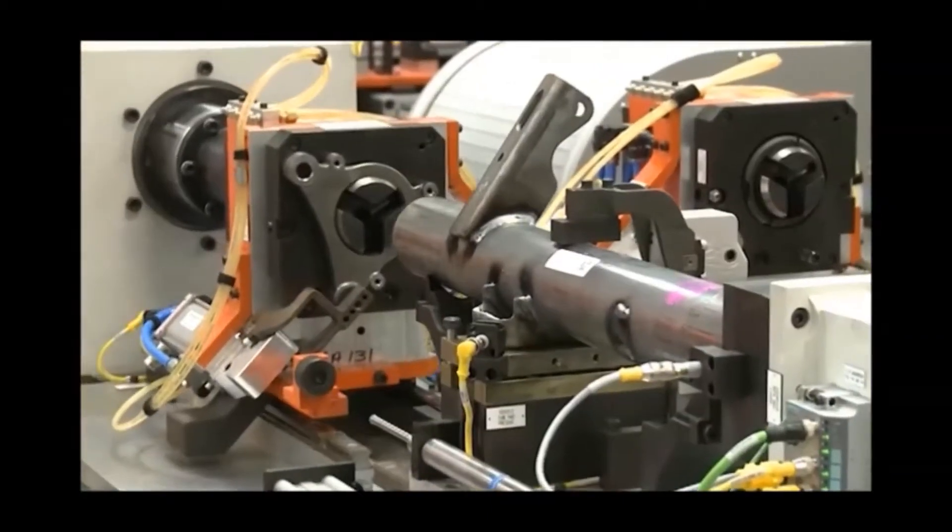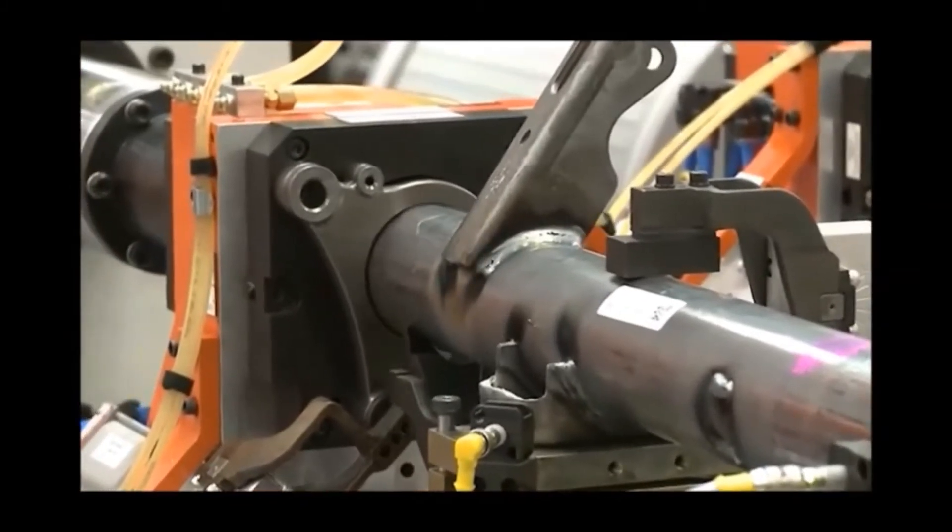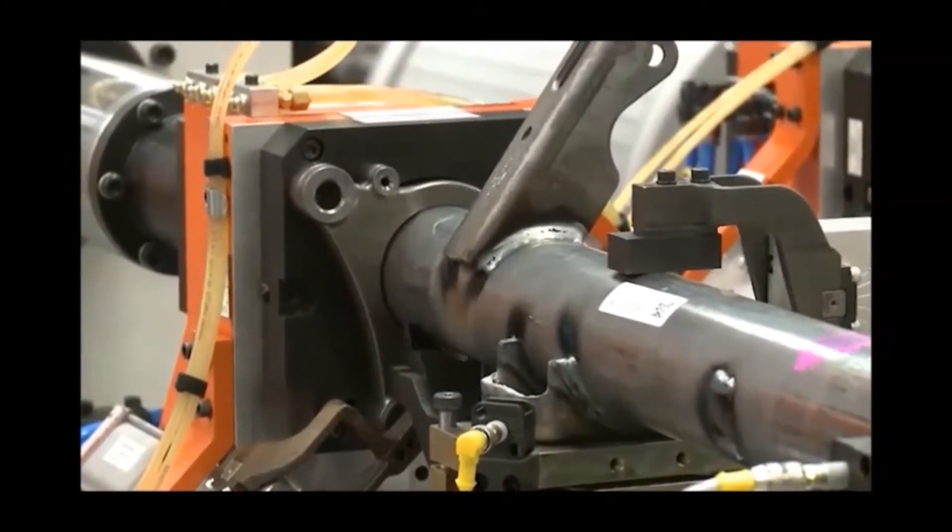The servo motor actuated press is utilized with force and distance monitoring to press the brake flange onto the tube before it is welded.